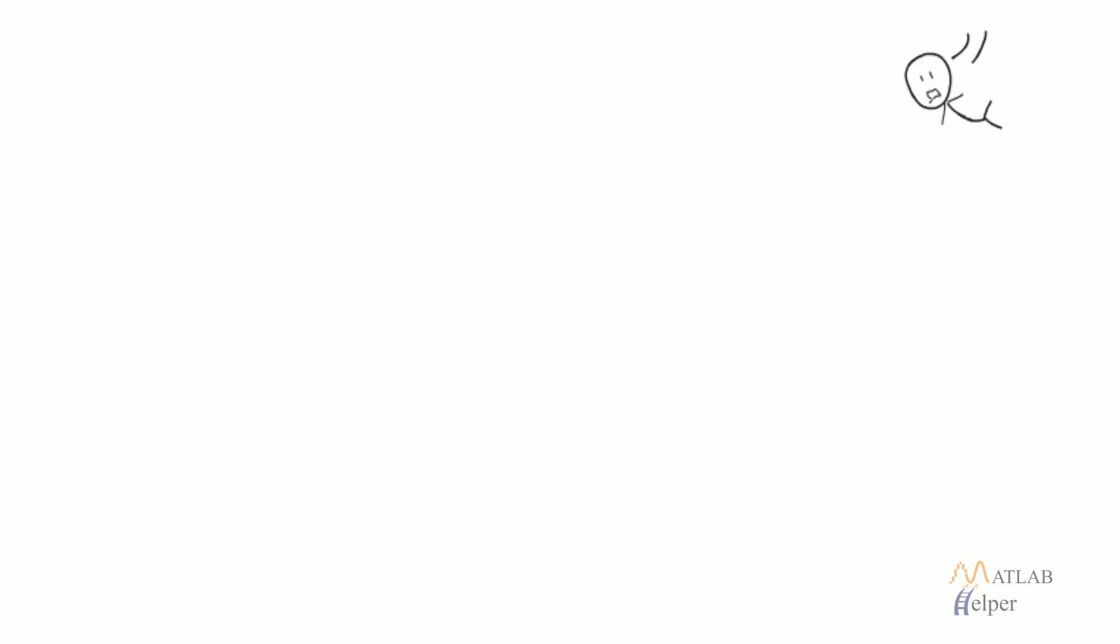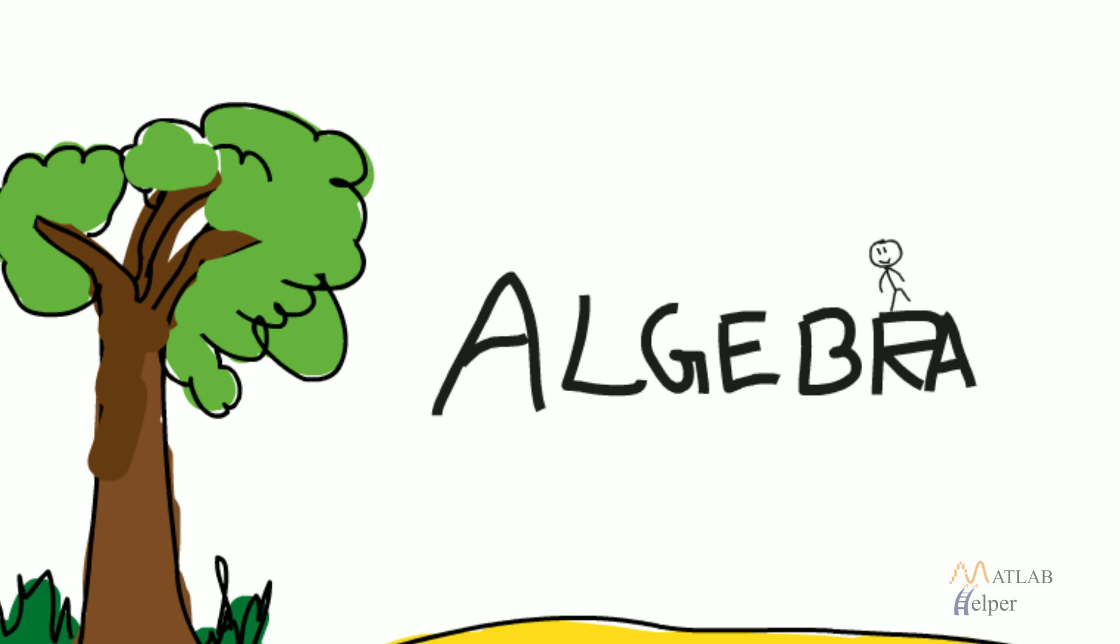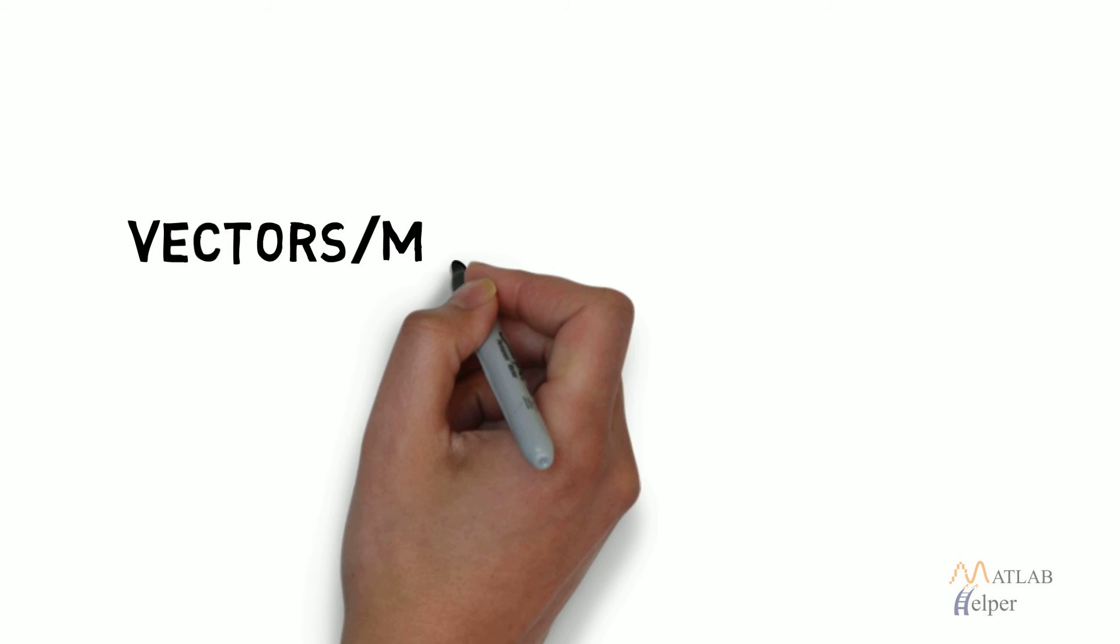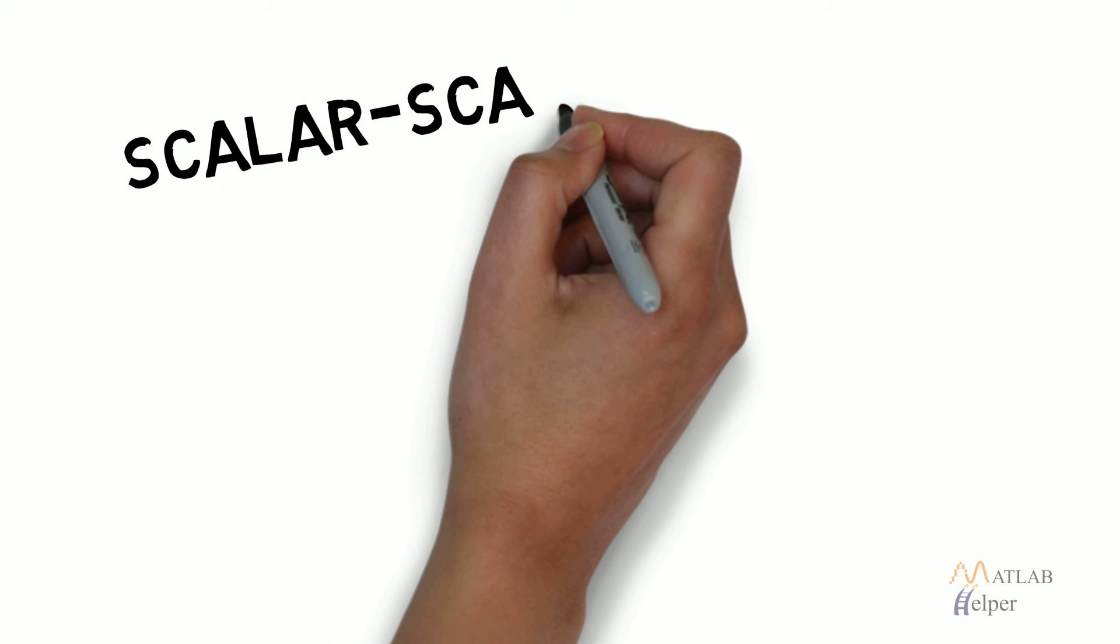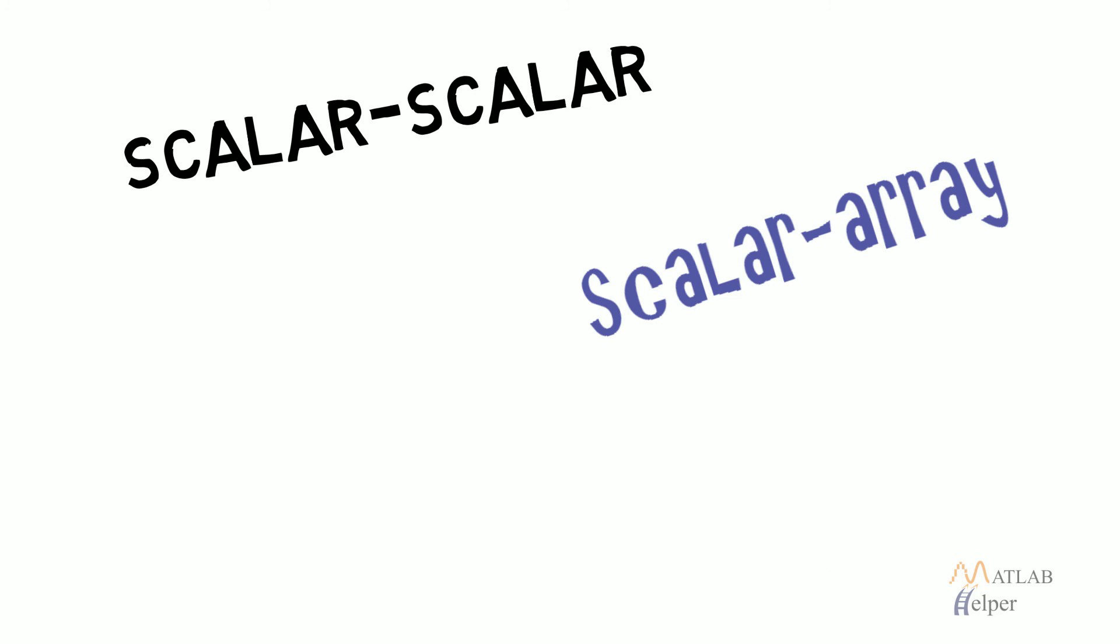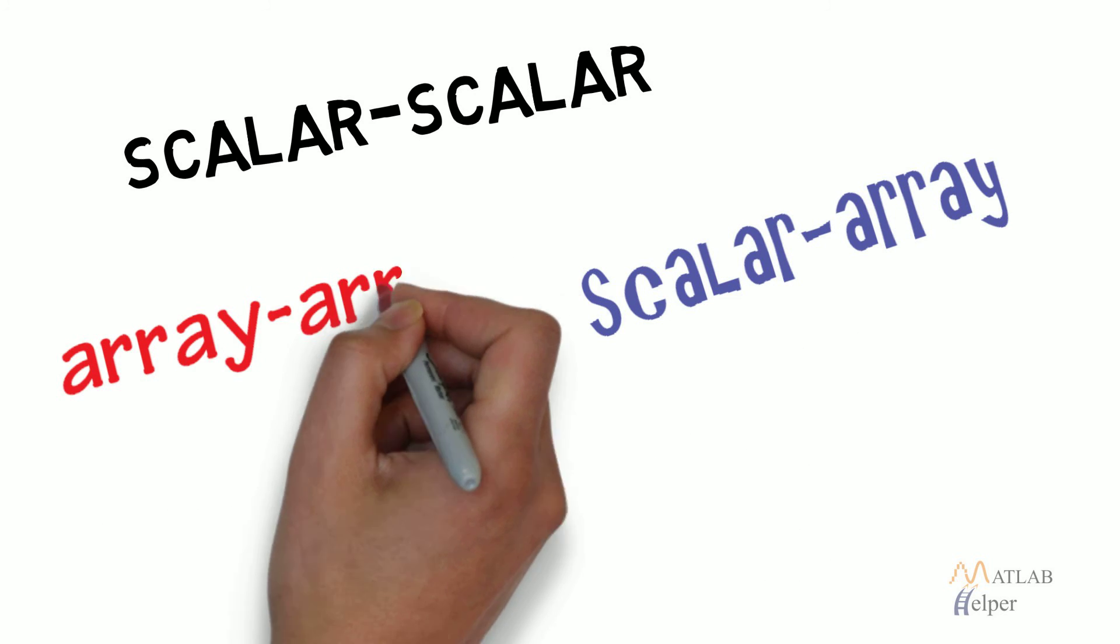So now let's move forward to the next topic: Algebra. It is possible to perform all basic algebra operations on vectors or matrices and scalars. These operations can be either between a scalar and a scalar, a scalar and an array, an array and array, and between corresponding elements of the array.